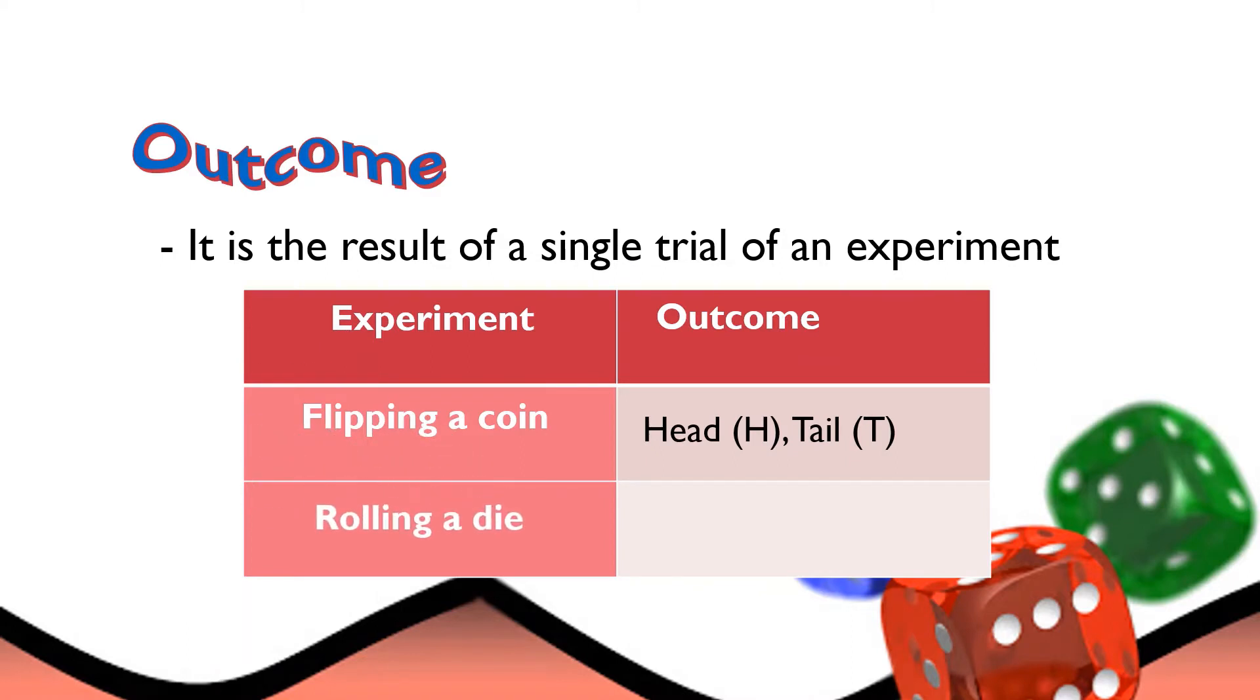For the second one, we have rolling a die. When we roll a die, there are six possible outcomes that may result. We have the 1, 2, 3, 4, 5, and 6. Since a die has six phases.